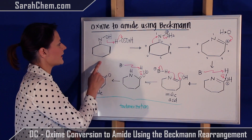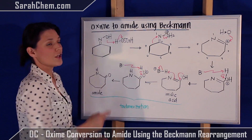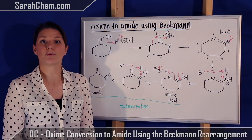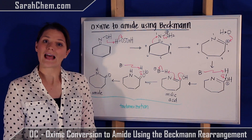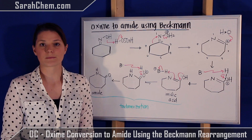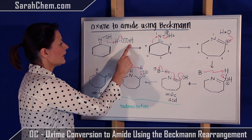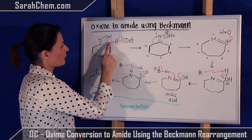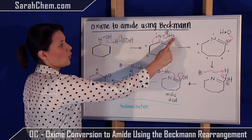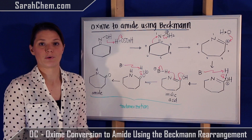What we're going to see first is we need to make the OH into a good leaving group. Typically the way we make things into good leaving groups is by protonating them, so an acid is required in this part of the mechanism. We're going to use sulfuric acid and use the H to protonate our OH group. Now we have an OH₂⁺, which is a very good leaving group.